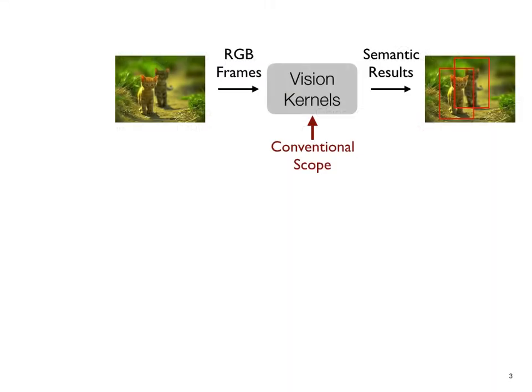The classic approach to close the energy gap has been to optimize the underlying hardware architecture for vision kernels of interest. And certainly we've seen a lot of recent work on optimizing the CNN accelerators.